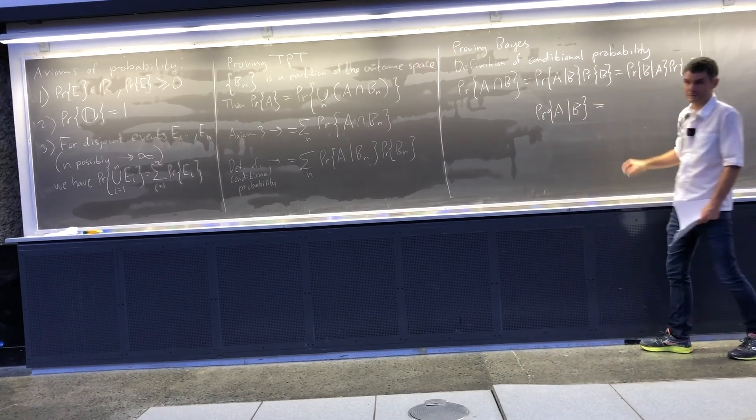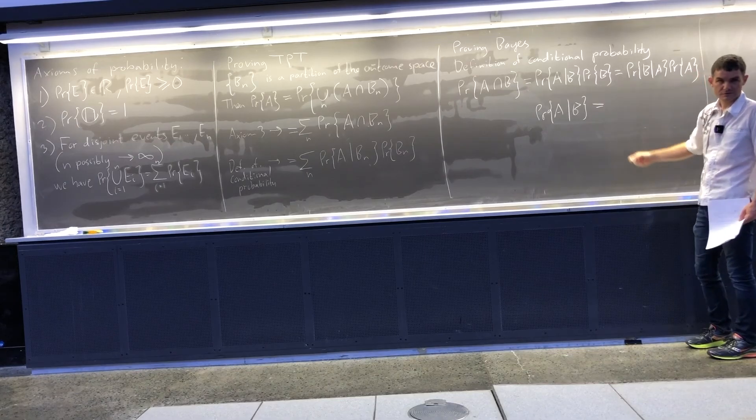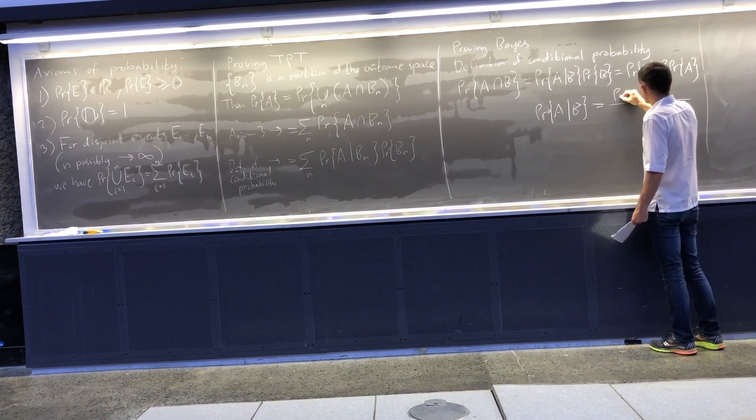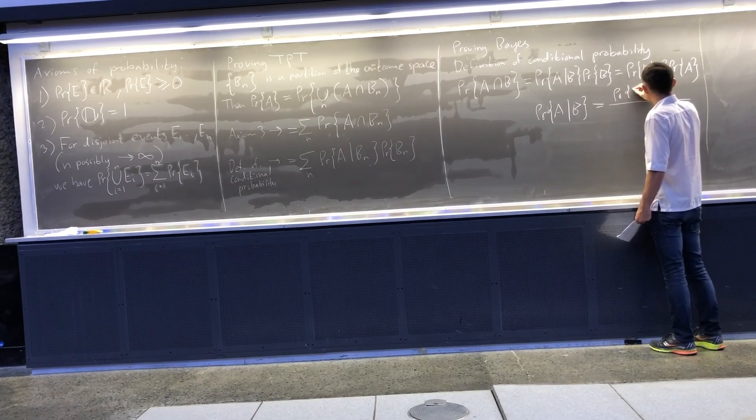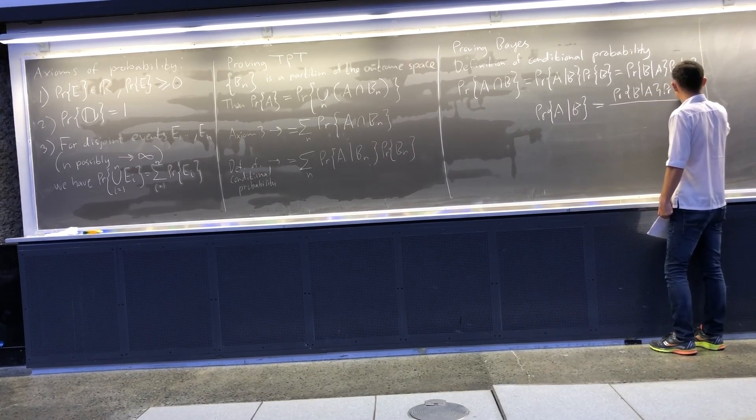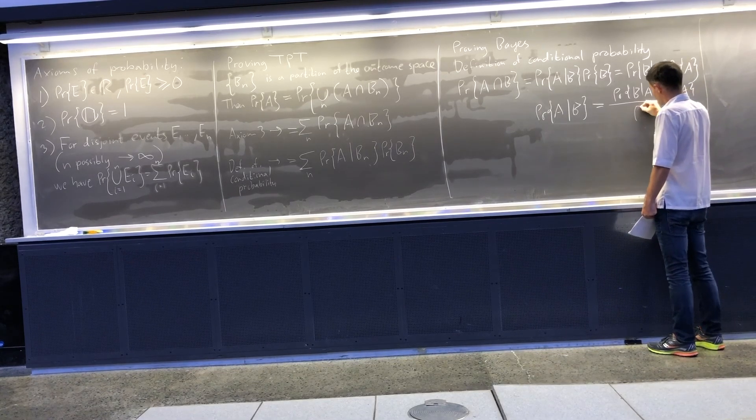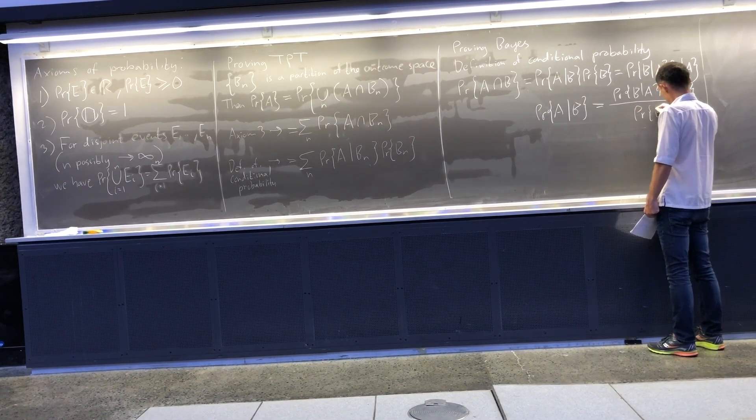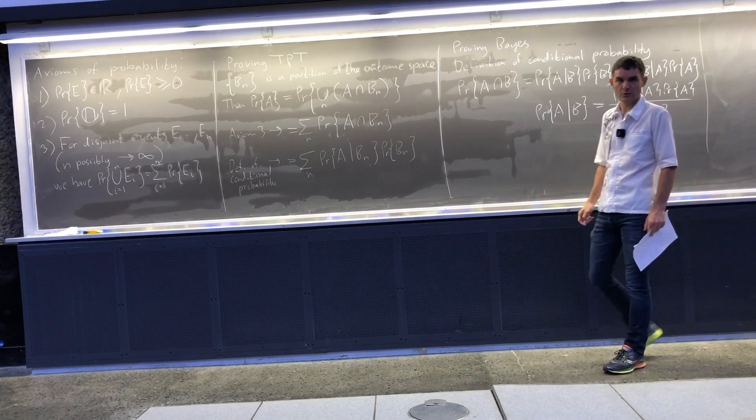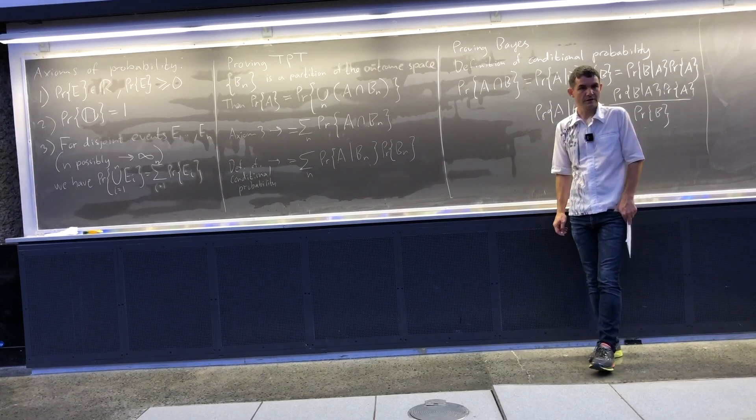On the right hand side, I have what is already in the numerator. So, that is how you derive Bayes rule in terms of events.